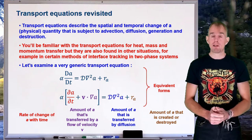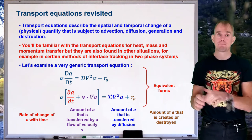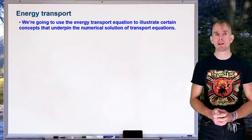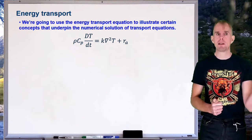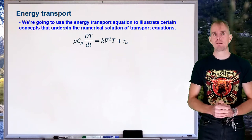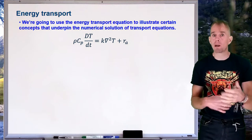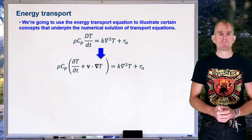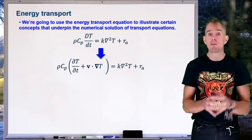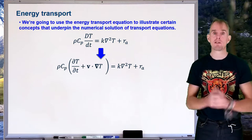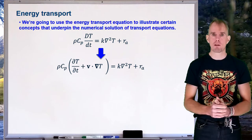So there's our transport equation — it simply describes how something changes with time and relates that change to factors that can drive it. Now let's formally look at energy transport. Here on the whiteboard is the energy transport equation: rho Cp dT/dt on the left-hand side, and K grad² T plus R_A on the right-hand side, where rho is density, Cp is heat capacity, K is thermal conductivity, and R_A is the rate of loss or gain of energy per unit volume. We can expand the left-hand side to show partial dT/dt plus the velocity field vector dotted with the temperature gradient vector — both driving a temperature change with time.